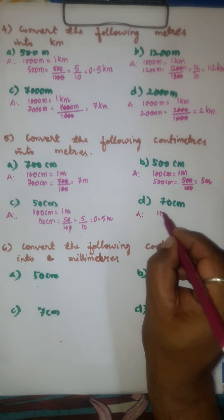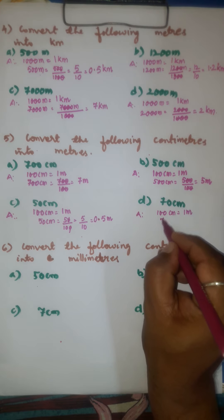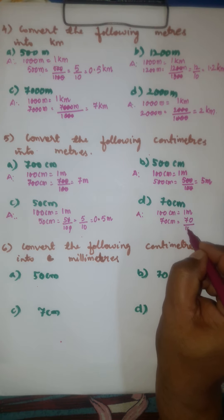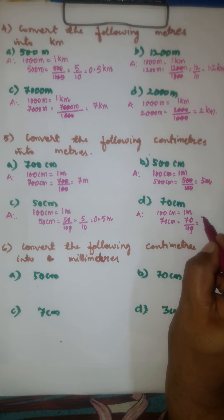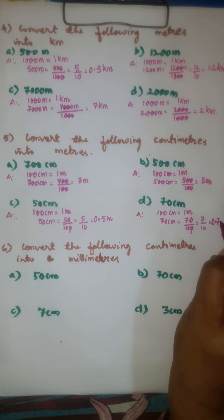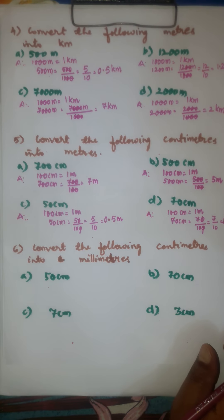100 centimeters is equal to 1 meter. So, 70 centimeters is equal to 70 over 100. After cancellation we get 7 over 10. Write 7 as it is; after 1 there is one 0, so shift 1 place from right to left and put the decimal point. Therefore, 0.7 meters is the answer.